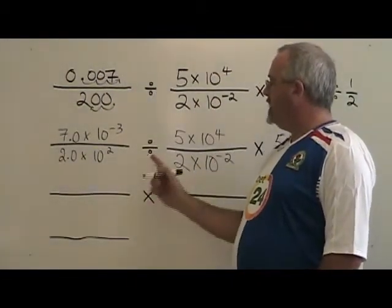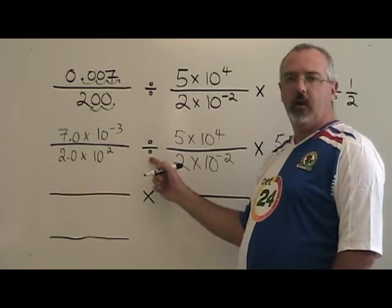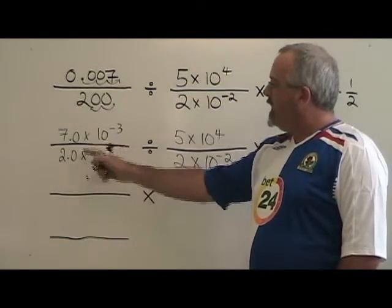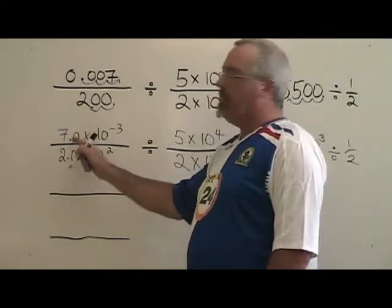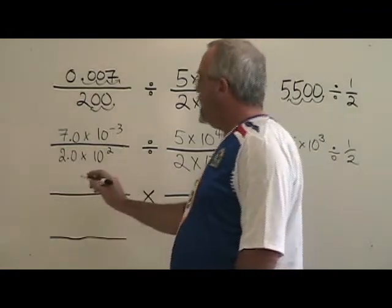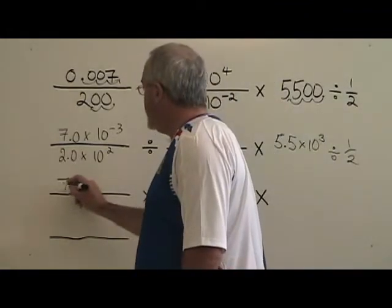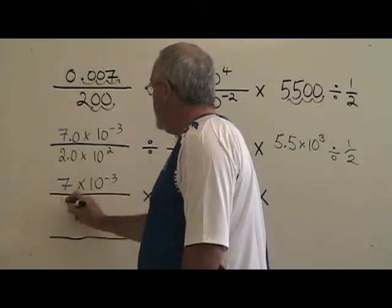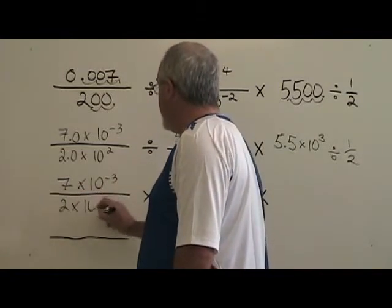Now, the next thing to do is to deal with the fractions that are being divided. Turn them upside down and multiply instead. I'm going to copy this fraction down and I'm going to get rid of the .0 to take away clutter from my calculations. So I have 7 times 10 to the negative 3 over 2 times 10 to the 2.